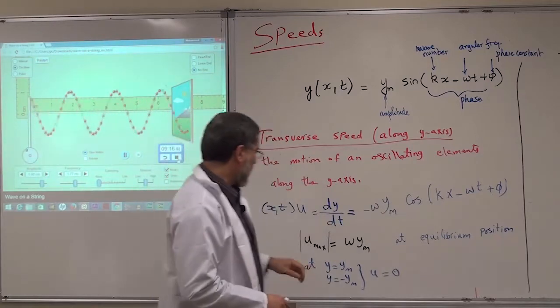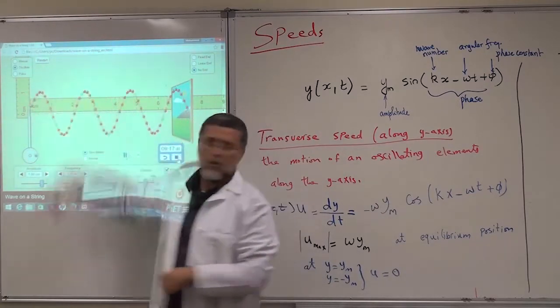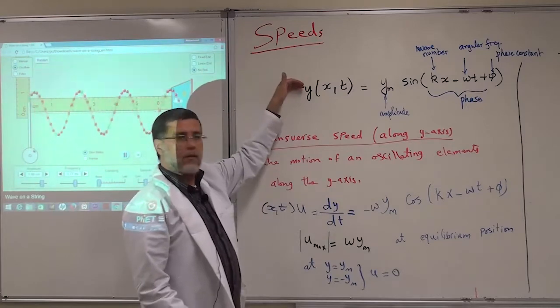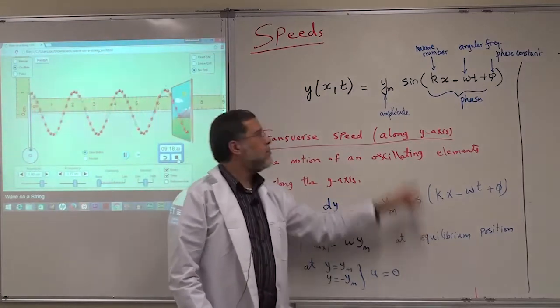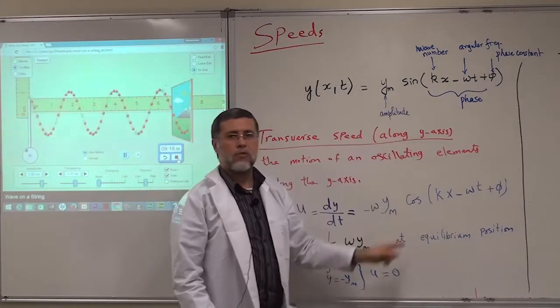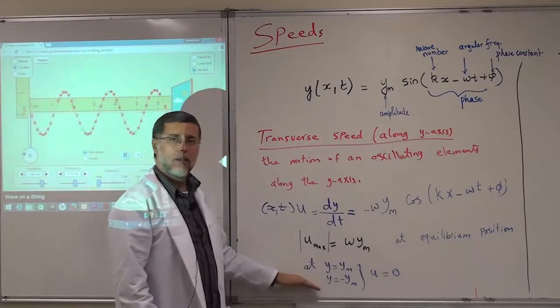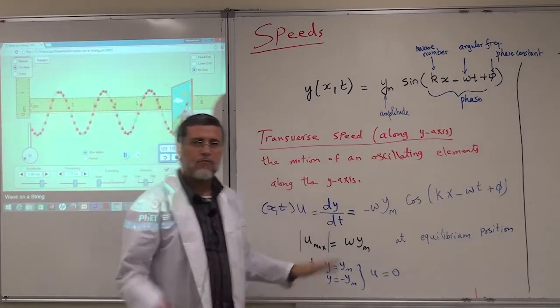Similarly, when you go to the maximum displacement — when this is maximum — the velocity will be zero because of the phase shift between sine and cosine. So the velocity will be zero when the displacement is maximum.